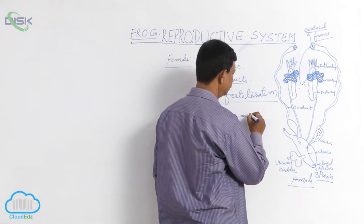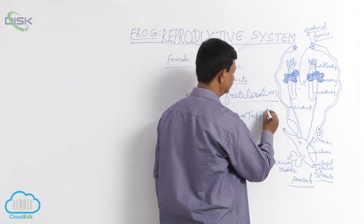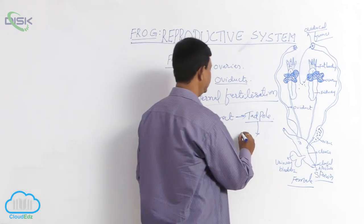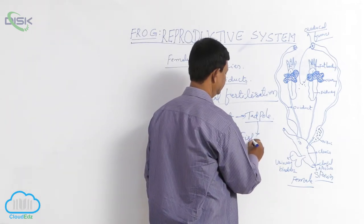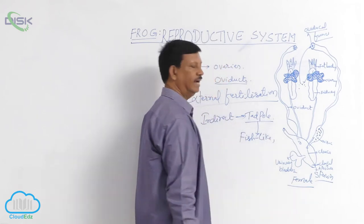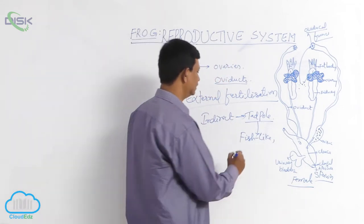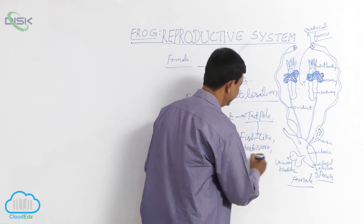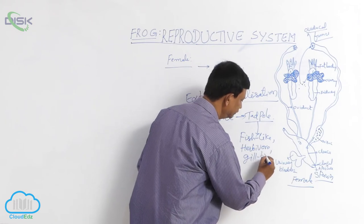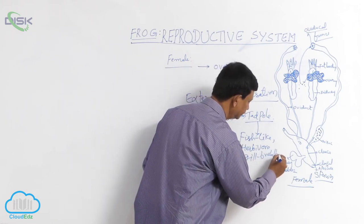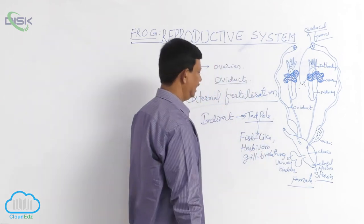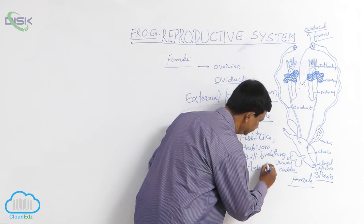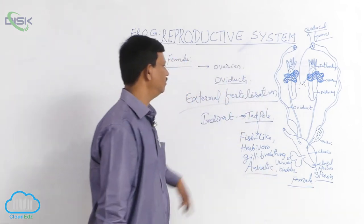Indirect development includes a tadpole larva. The tadpole larva has a fish-like appearance, is herbivorous, breathes through gills, and is aquatic. These are the characters found in the tadpole larva.